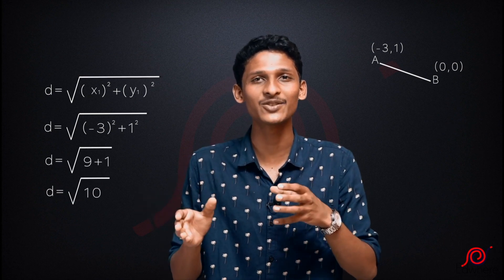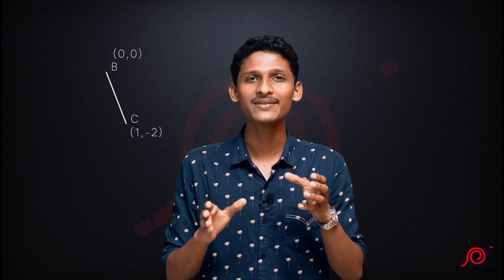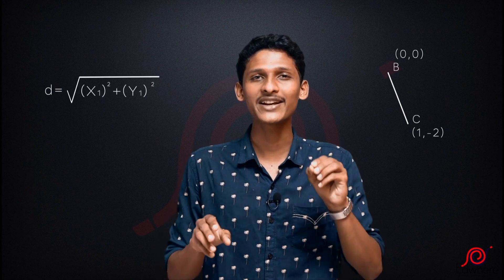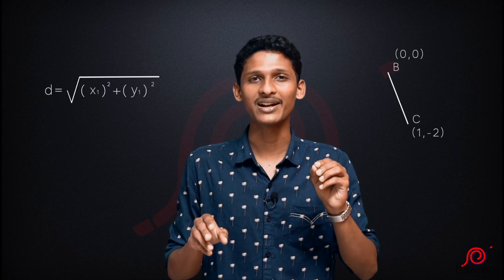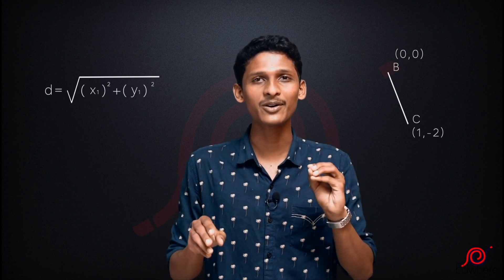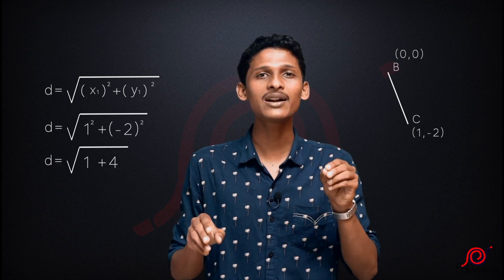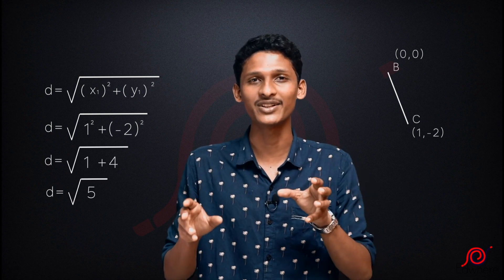The distance of AB is root 10. Now we have the length of BC side. B is (0, 0) and C is (1, -2). Since B is the origin, the formula is root of x1 squared plus y1 squared. Substituting: root of 1² plus (-2)² equals root of 1 plus 4, that is root 5.